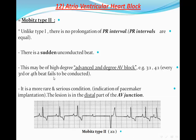In Mobitz type 2, every third beat or every fourth beat fails to be conducted. It is a more rare and serious condition and is usually an indication for pacemaker implantation. The lesion in this case is in the distal part of the AV junction, whereas in Mobitz type 1 it was in the proximal part. This example shows a normal PR interval within the big box — fixed PR interval, not prolonged, with no progressive prolongation — but suddenly there is a P wave without a QRS complex.